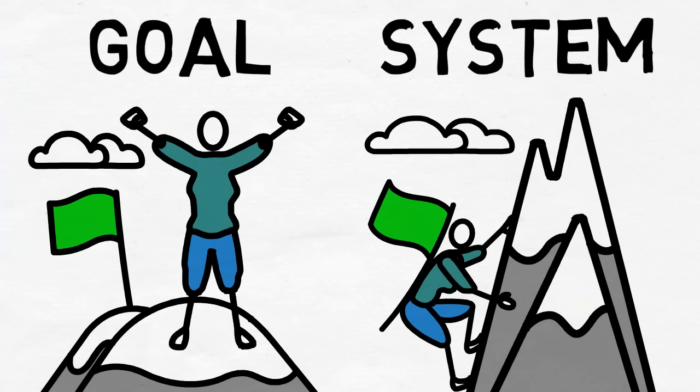To put it another way, a goal is the destination, while a system is the journey.